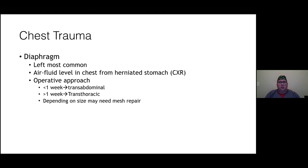Diaphragm injuries are most common on the left side, typically characterized on chest x-ray by an air-fluid level in the chest or a coiled OG/NG tube in the chest. The operative approach depends on timing: trans-abdominal if less than a week from diagnosis, transthoracic if greater than a week. Mesh may be needed for a large defect.